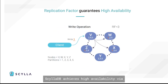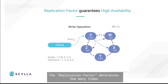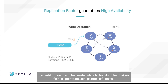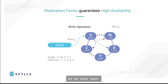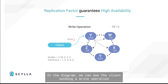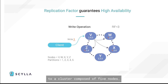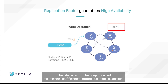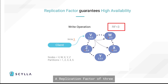ScyllaDB achieves high availability via a setting known as the replication factor. The replication factor determines how many times the data should be replicated to other nodes, in addition to the node which owns the token for a particular piece of data. In the diagram, we can see the client sending a write operation to a cluster composed of 5 nodes. As the replication factor is set to 3, the data will be replicated to 3 different nodes in the cluster. A replication factor of 3 is what we recommend for production purposes.